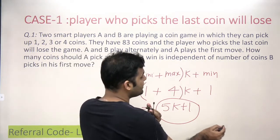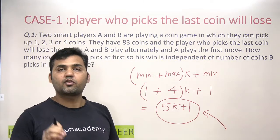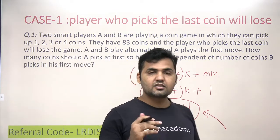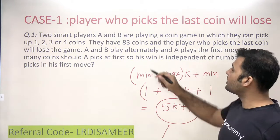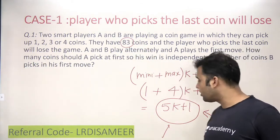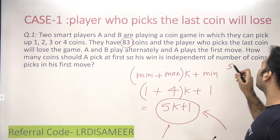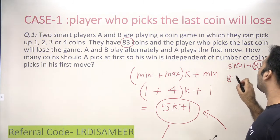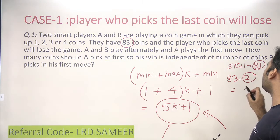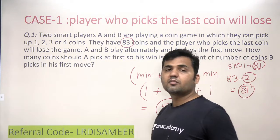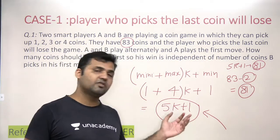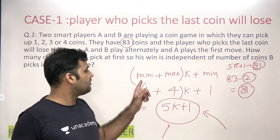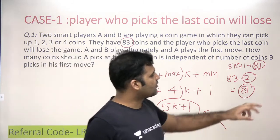So the controlling factor is the set of numbers of the form 5k + 1 — these are the coin counts A wants to leave for B on the table in every turn. For the first move, find the largest 5k + 1 number less than the total, subtract it from the total, and that gives the number of coins A must pick. This is the direct method: minimum + maximum × k + minimum.